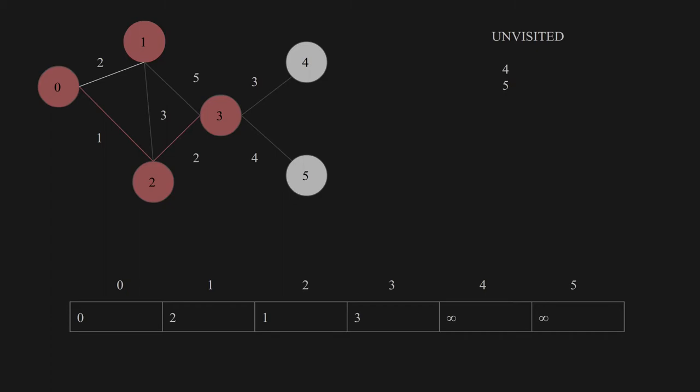Now we visit house 3. Here are the new distances for the neighboring houses: for house 1 it is 8, for house 2 it is 5, for house 4 it is 6, and for house 5 it is 7. So we only update house 4 and house 5, because all the other values are bigger than the existing distances.